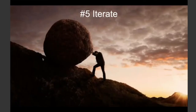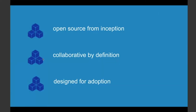Number five: iterate. Keep it simple, always keep knocking on doors, work from real-world use cases, get something out there, get feedback, and then iterate on it. In conclusion, I feel that FDC3 has been successful because of the key values adopted from the start: we are open source from inception, we've been collaborative by definition — one of the C's in FDC3 stands for collaboration — and we are designed for adoption. FDC3 starts small and lets you come in at any level you want, ensuring you can bring as wide a group as possible to the table.